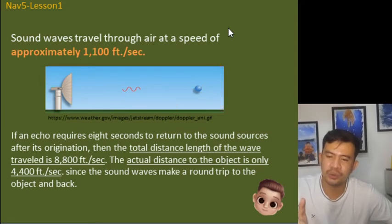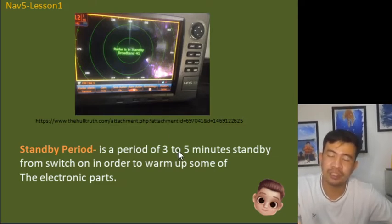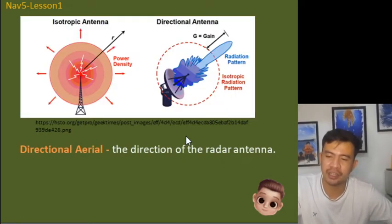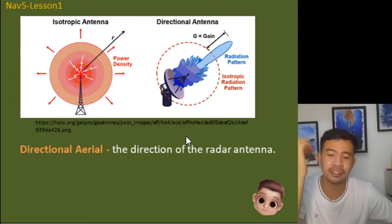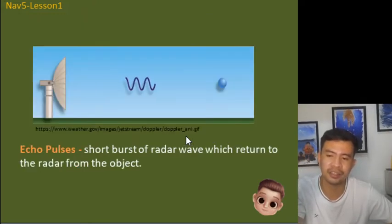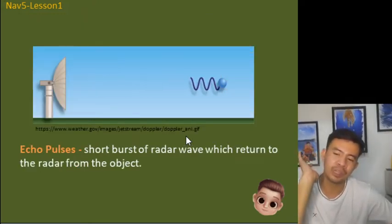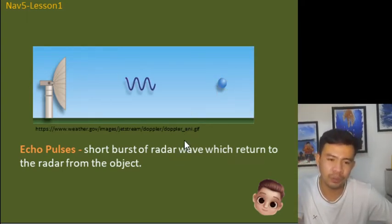There are key terminology to know. The standby period is a 3 to 5 minute period for the radar to warm up its electronic parts. The directional aerial refers to the direction of the radar antenna. Echo pulses are short bursts of radar waves which return to the radar from the object.